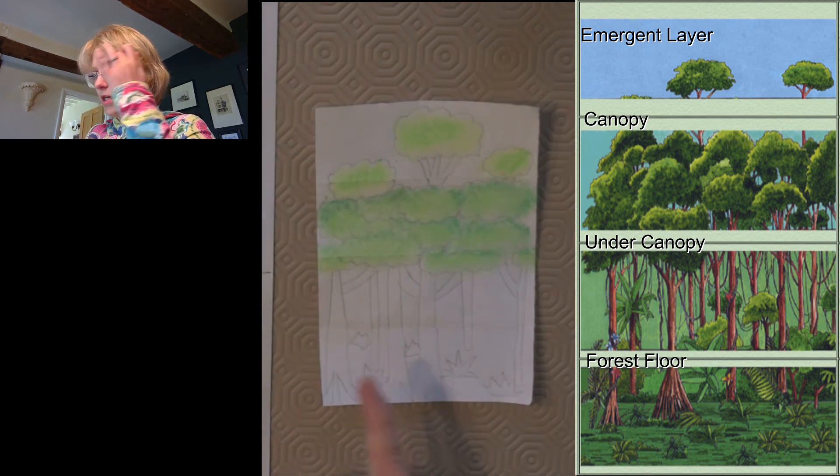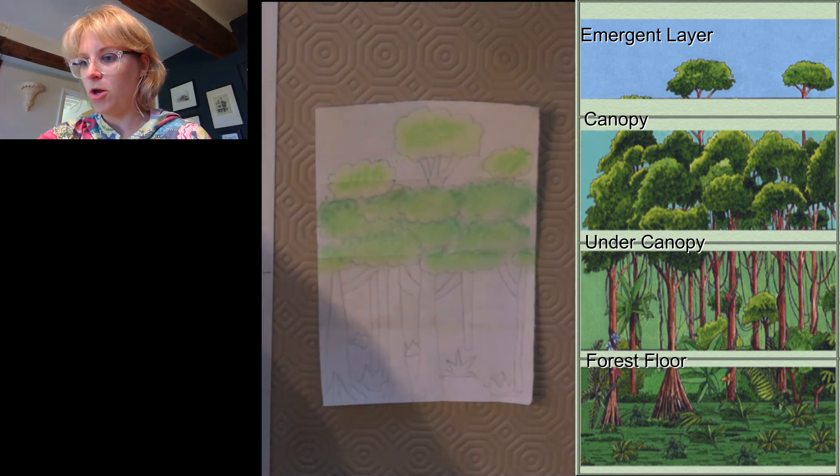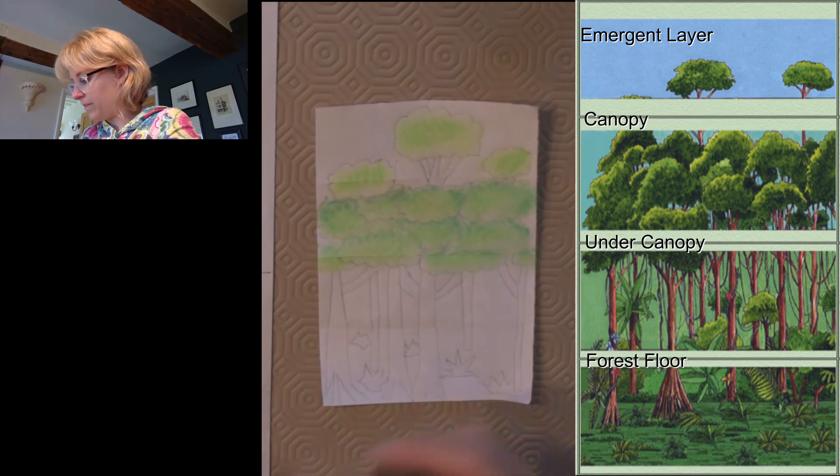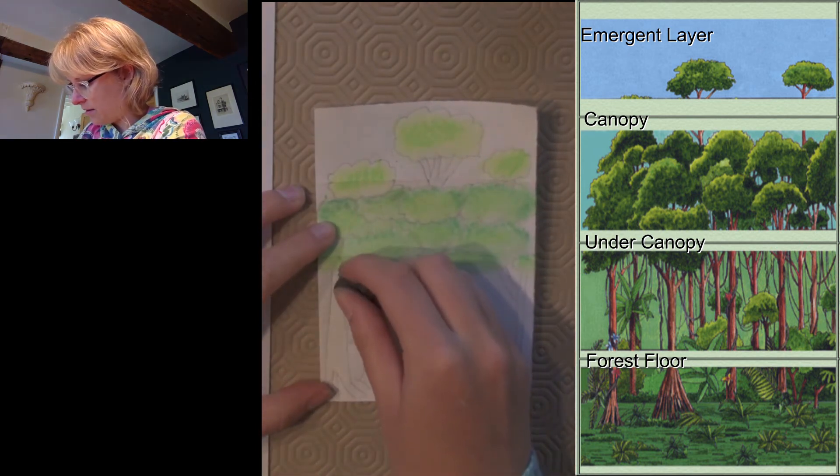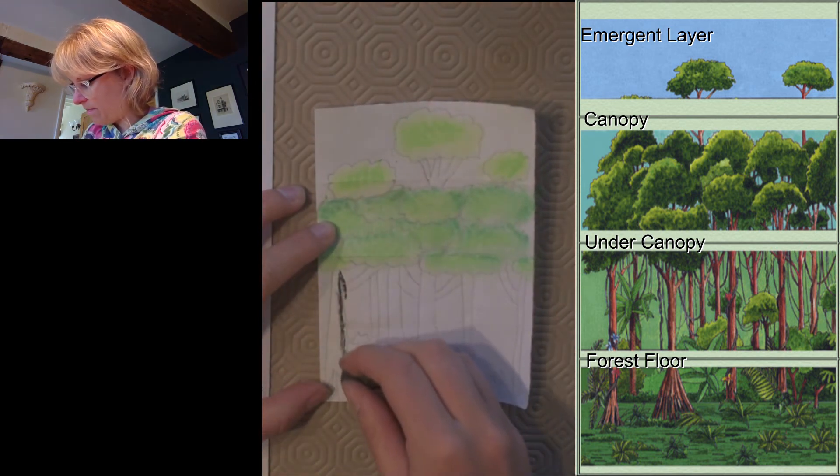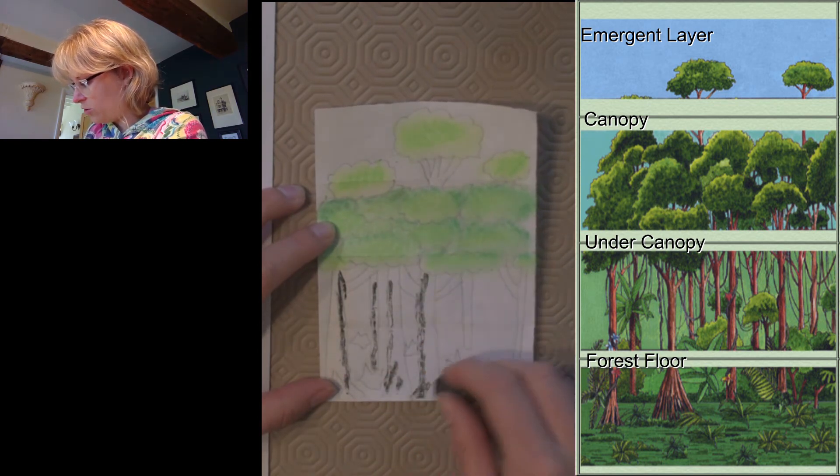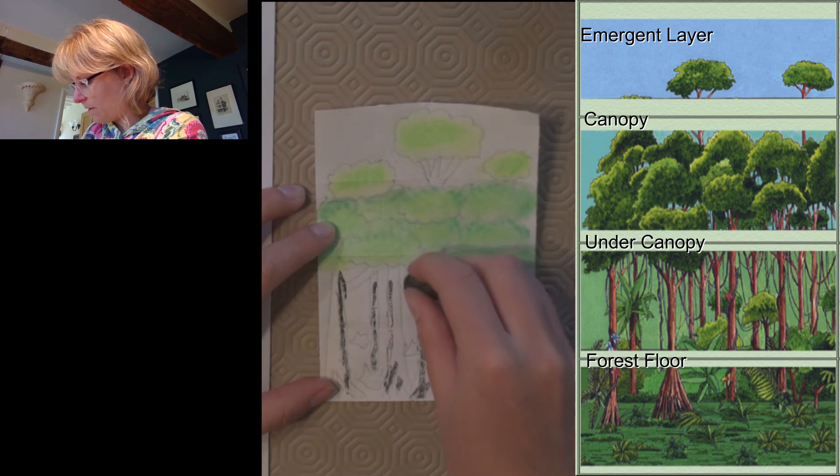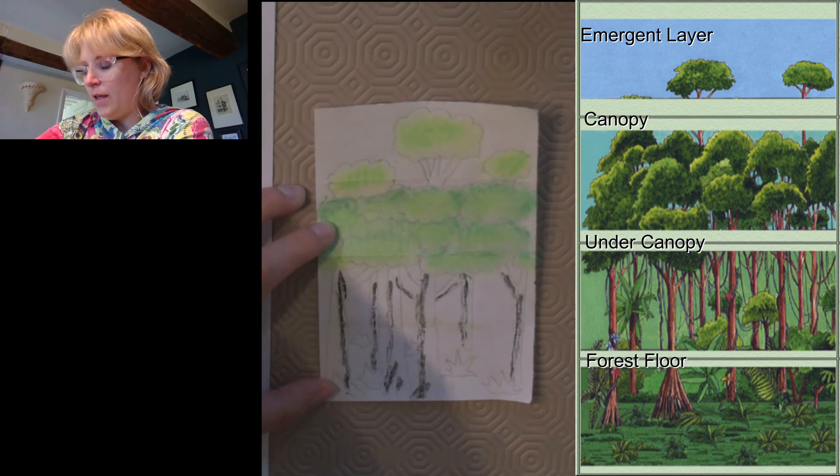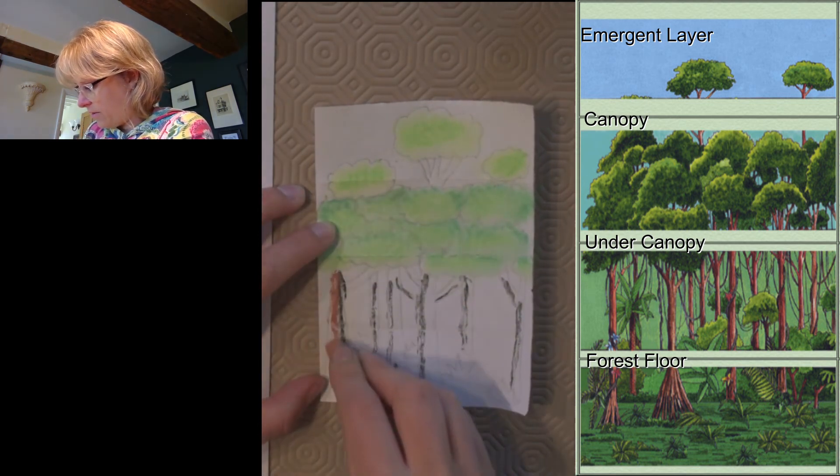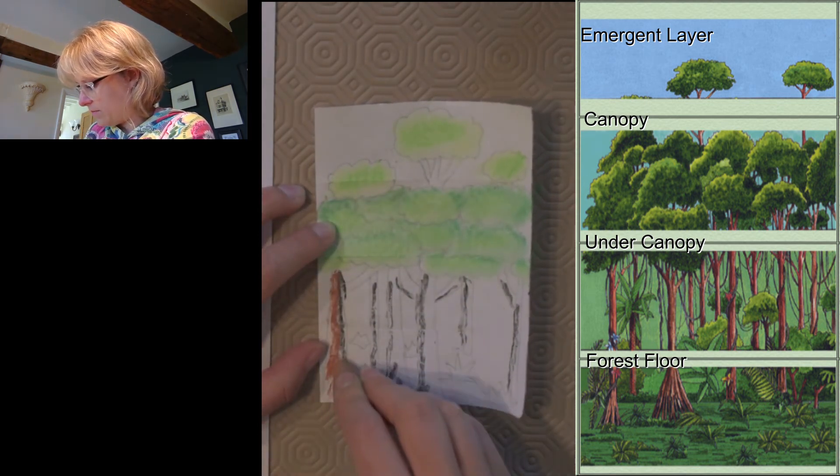And now I'm on to the trunks of the trees. So I need some brown and black. I've got a little bit of black that I'm just going to do as a bit of shading. I'm not putting too much on, just maybe one line each. And there's some brown. And the plan is to smudge them together.